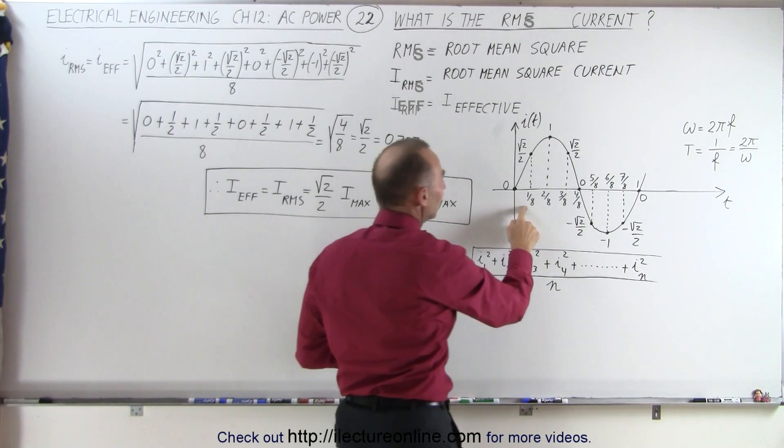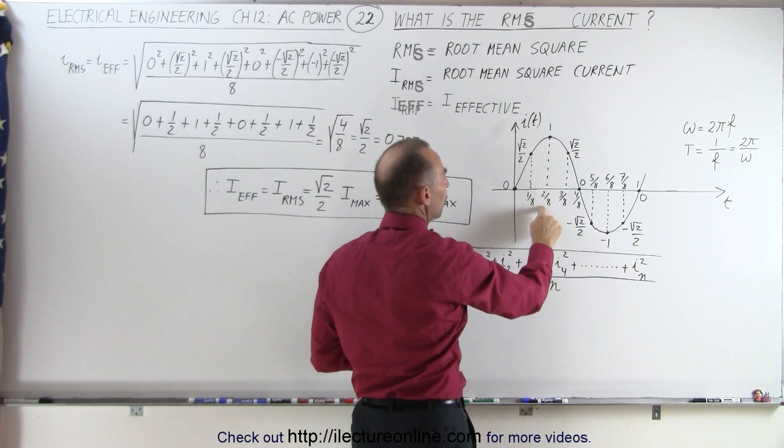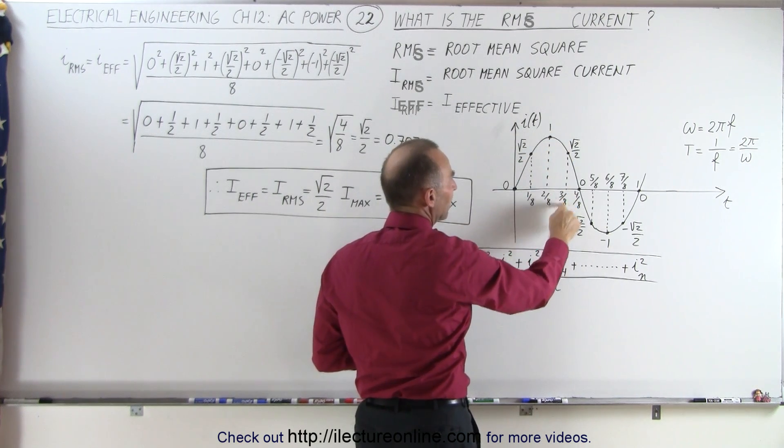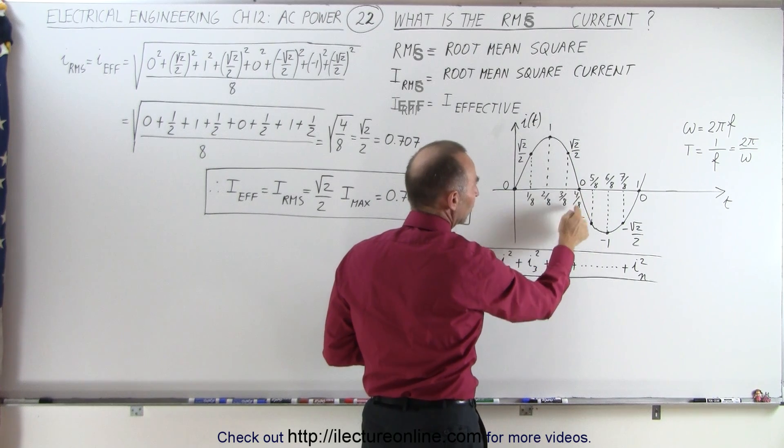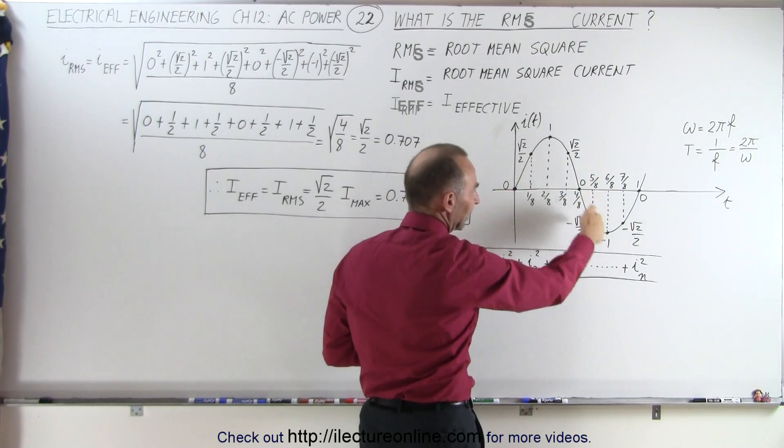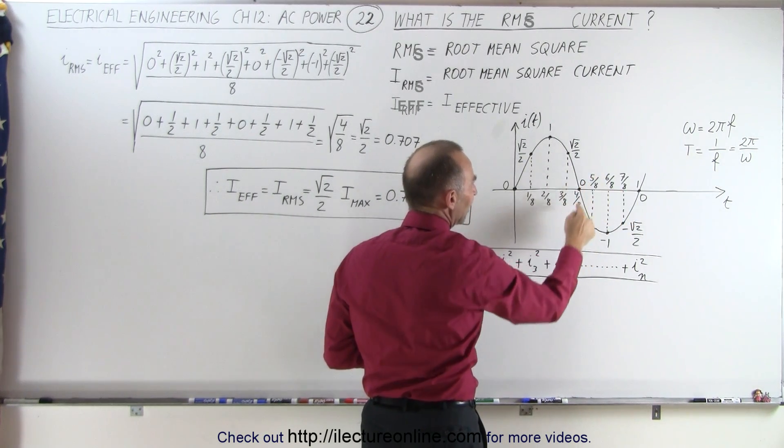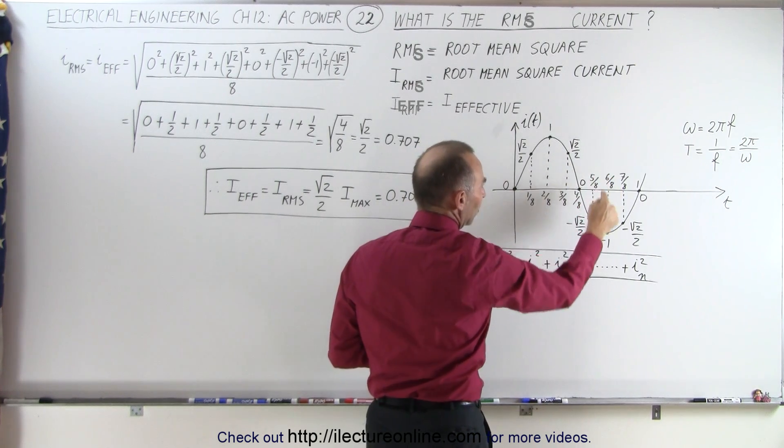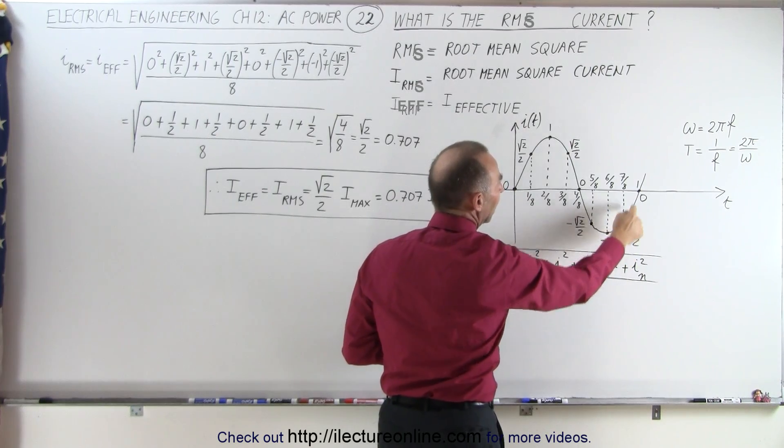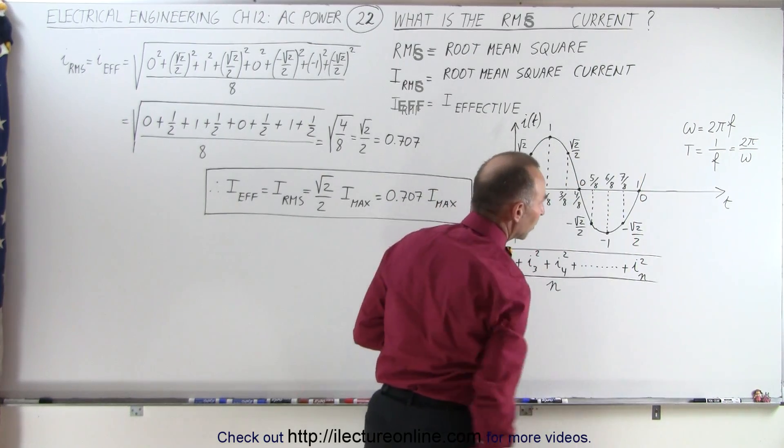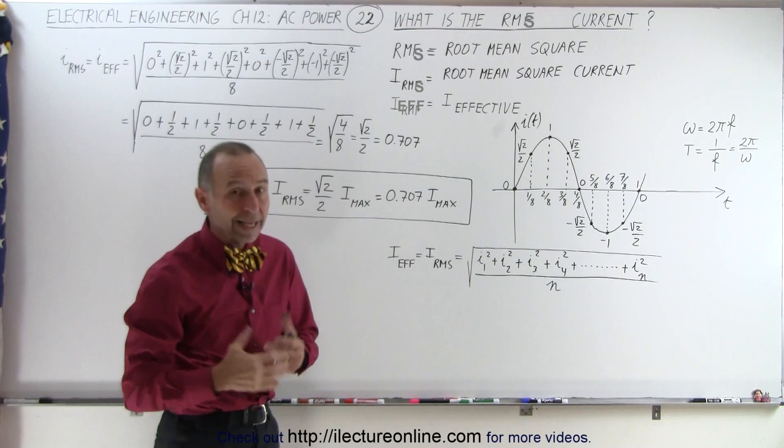So after 1/8 of a period, the current is the square root of 2 over 2. After 2/8, it's 1. After 3/8, it's the square root of 2 over 2. After 4/8, or halfway through the period, we're back down to 0. Now we get the negative values. After 5/8, it's minus the square root of 2 over 2. After 6/8, it's minus 1. After 7/8, it's minus the square root of 2 over 2. And then again, if we then complete the whole period, we get back to 0.